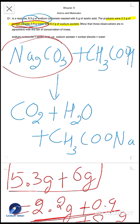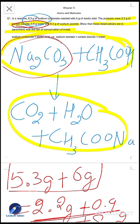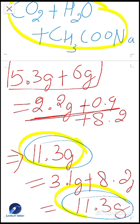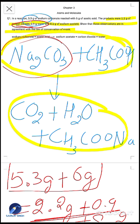So the question asks us to show that these results agree with the law of conservation of mass. Before the reaction and after the reaction, mass remains the same: 11.3 grams equals 11.3 grams. This shows mass cannot be created nor destroyed in a chemical reaction, so this chemical reaction agrees with the law of conservation of mass.